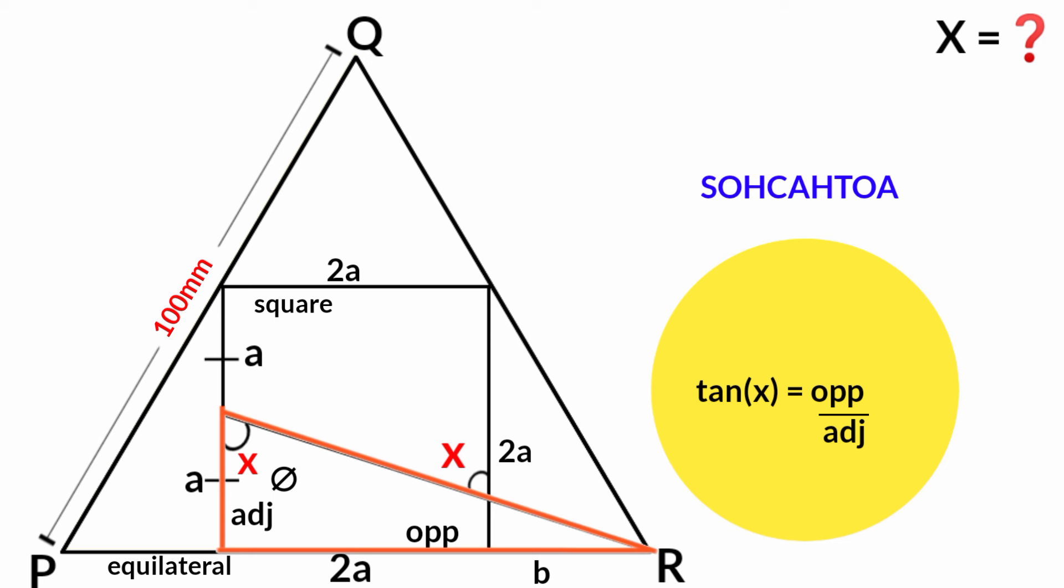Theta is x, opposite is 2a plus b, and adjacent is a. So tan x equals 2a plus b all over a. 2a plus b all over a is the same as 2a over a plus b over a. Here a cancels a, so tan x equals 2 plus b over a.